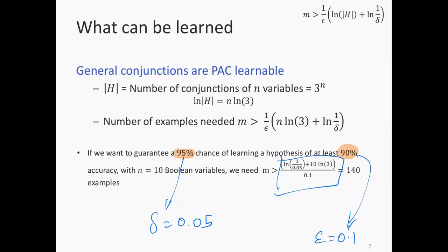A student asks: why do I have a base 3? The 3 comes from the conjunction counting — three choices per position. So we've seen two examples of PAC learnability based on the size of the hypothesis space.